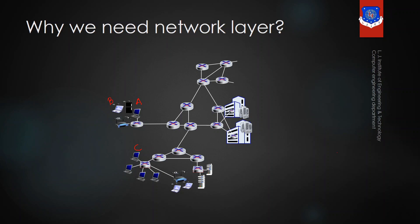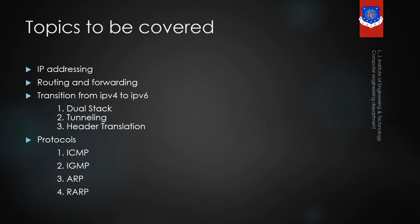It cannot send data using the physical address, so it requires the IP address. Using the physical address, a device can send data to its adjacent node only. But using the IP address, a device can send data to another network. That is why the physical address is responsible for node-to-node delivery, but the IP address is responsible for device-to-device or one network to another network delivery.